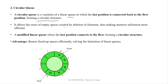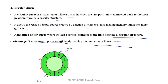It allows reuse of the empty spaces created by deleting the element, thus making the memory utilization more efficient. मतलब जो linear Queue में problem आती थी — delete होने के बाद वो space empty होते थे — वो empty spaces अब circular Queue में reuse होंगे। A modified linear Queue where the last position connects to the first, forming the circular structure. Advantage: reuse of freed up space efficiently, solving the limitations of the linear Queue.